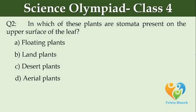In which of these plants are stomata present on the upper surface of the leaf? Option A: floating plants. Option B: land plants. Option C: desert plants. Option D: aerial plants.